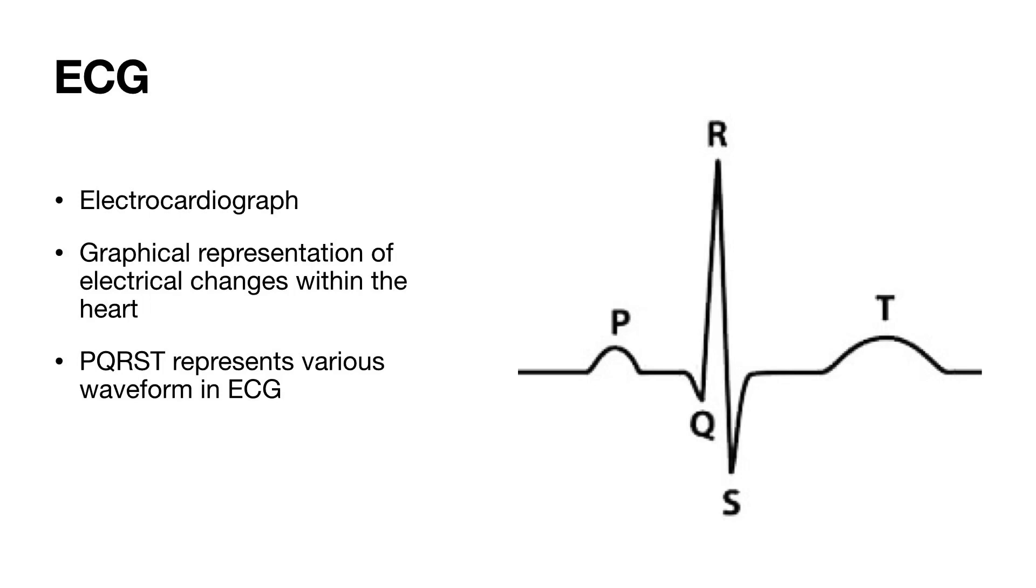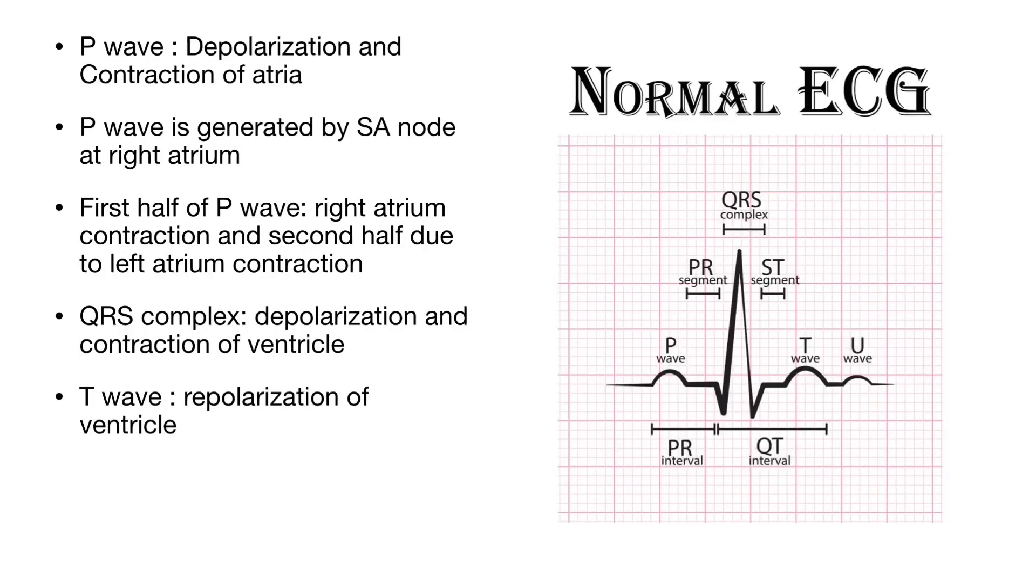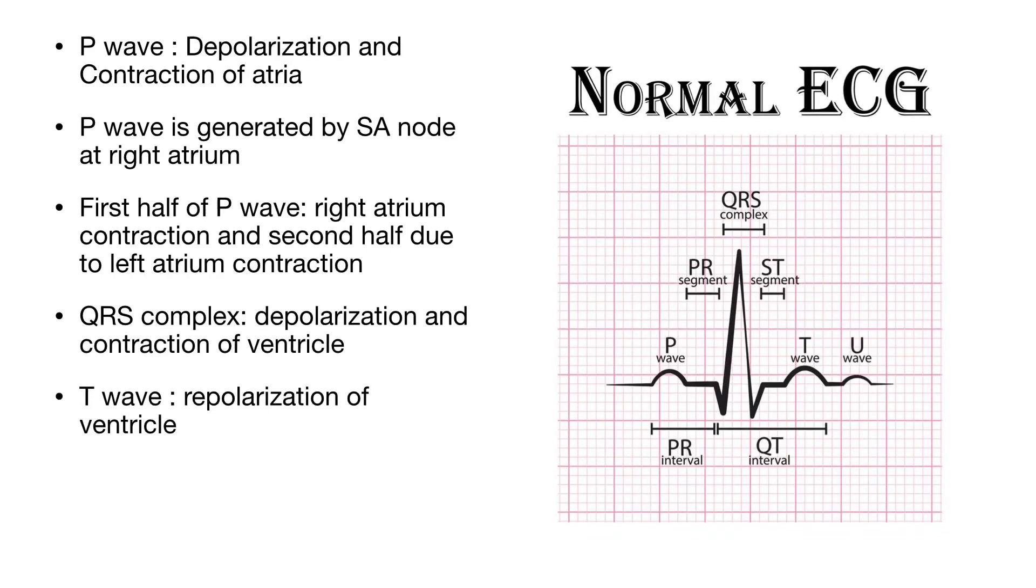Let me first introduce the PQRST terminology. PQRST signifies the various waveforms of an ECG tracing. P-wave represents depolarization and contraction of atria. Normal P-wave is generated by SA nodes situated in right atrium. So first half of P-wave is due to right atrial contraction and second half due to left atrial contraction.